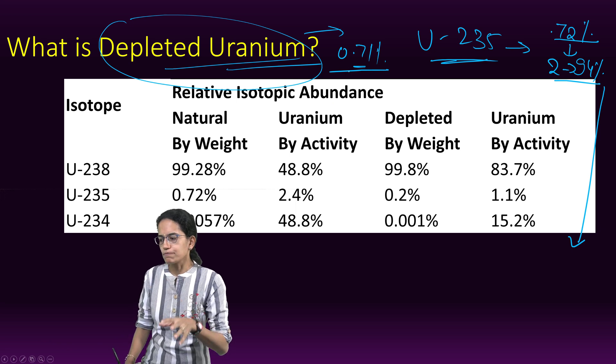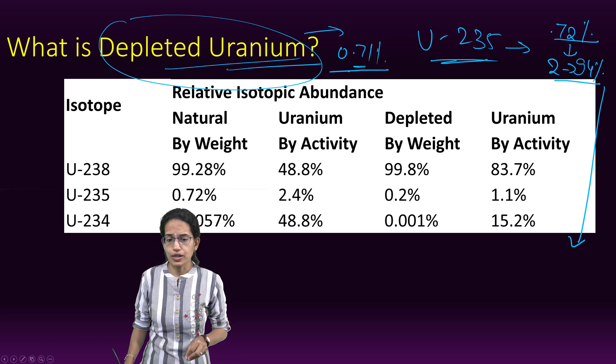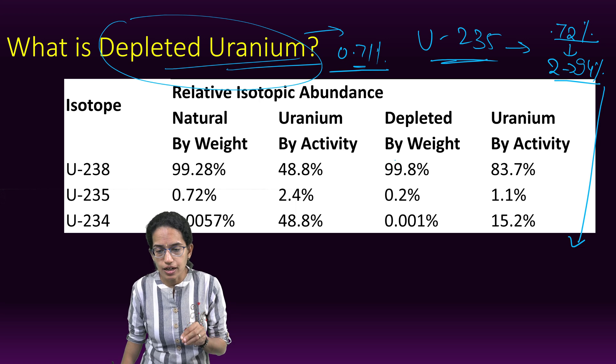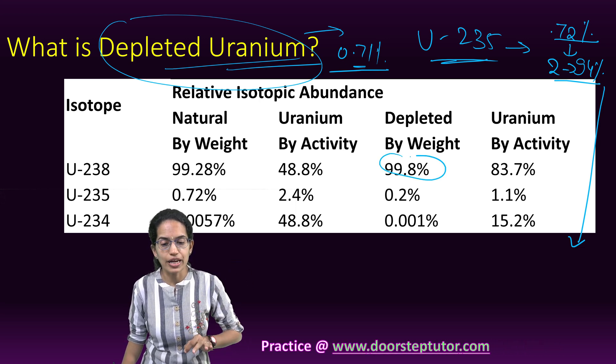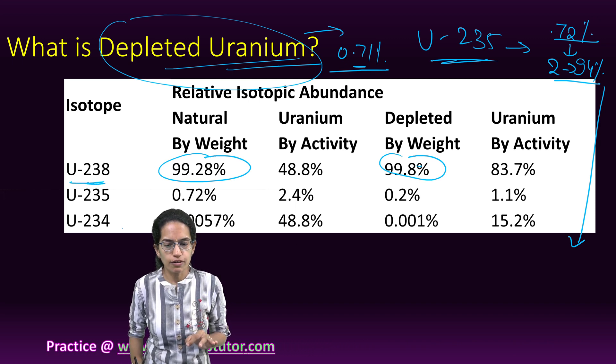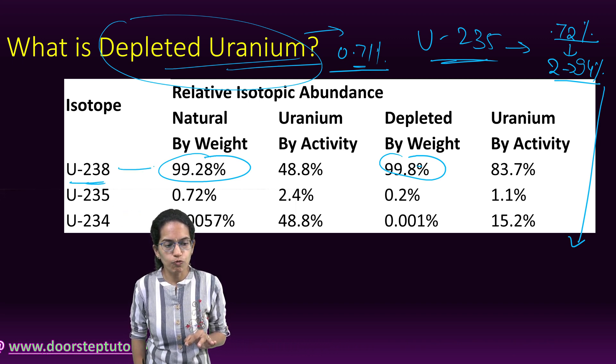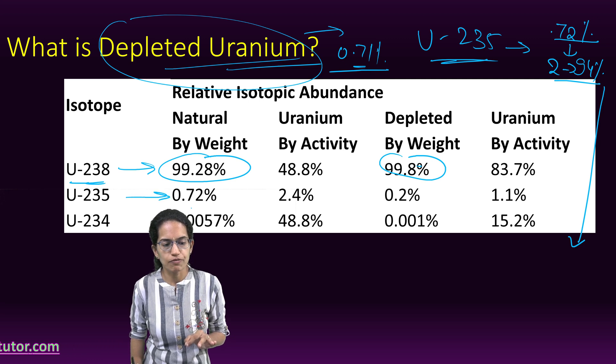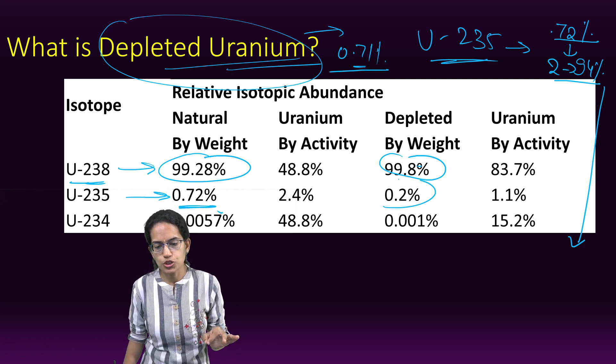It's important to understand that depleted uranium by weight of U-238 is higher than natural uranium. For U-235, the proportion is 0.72% in natural uranium, which reduces to 0.2% in depleted uranium.